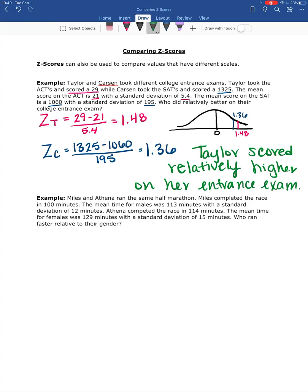So let's look at another example. Miles and Athena ran the same half marathon. Miles completed the race in 100 minutes. The mean time for males was 113 minutes with a standard deviation of 12 minutes. Athena completed the race in 114 minutes. The mean time for females was 129 with a standard deviation of 15. Who ran faster relative to their gender?